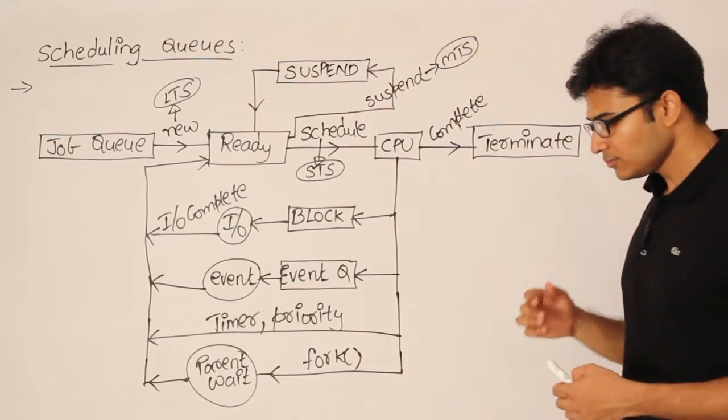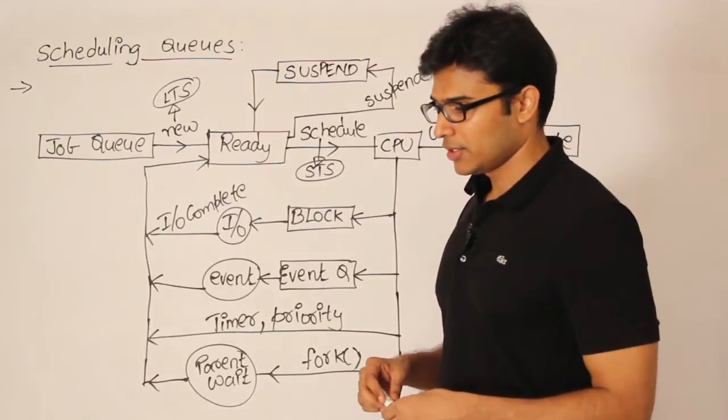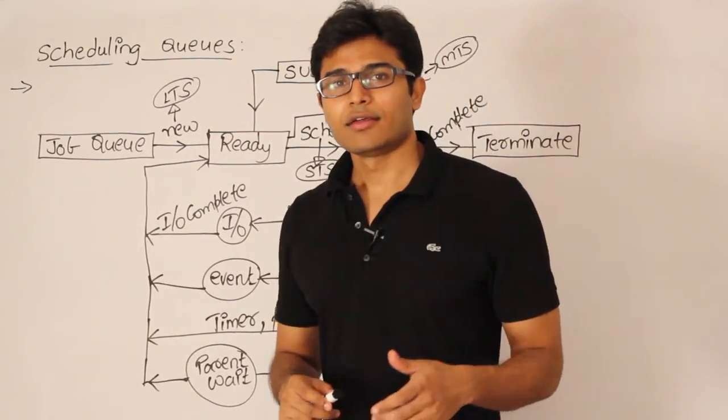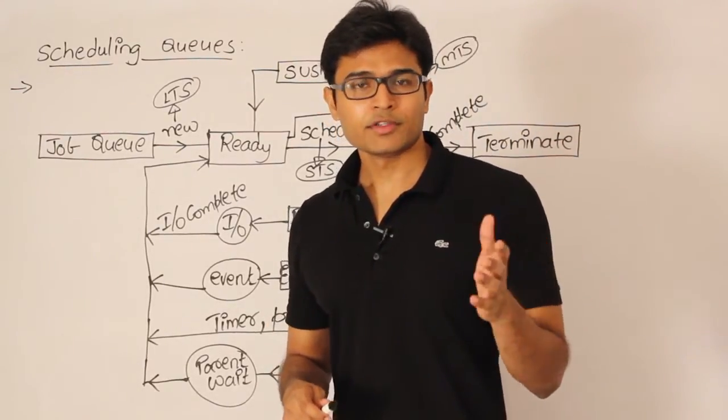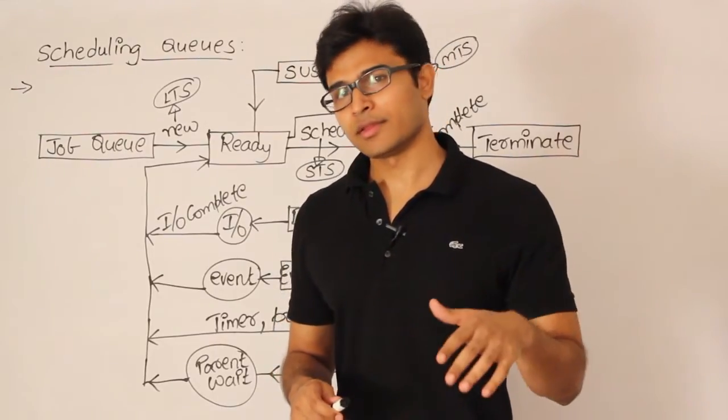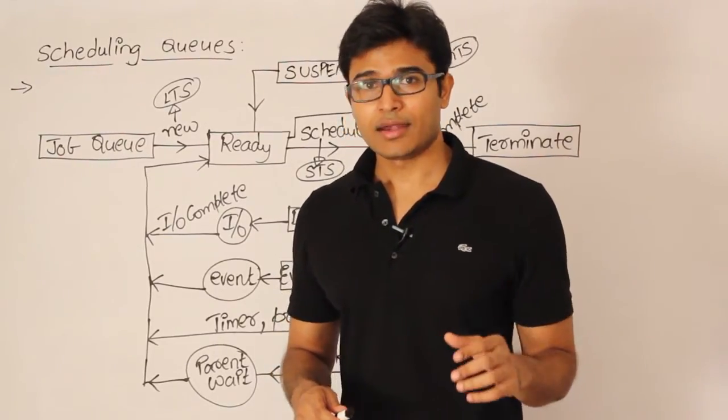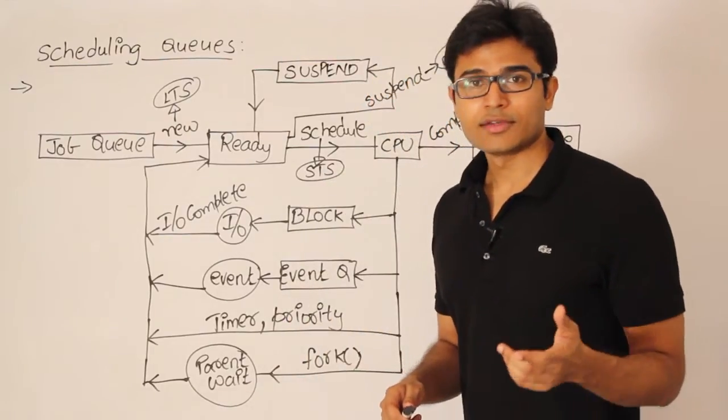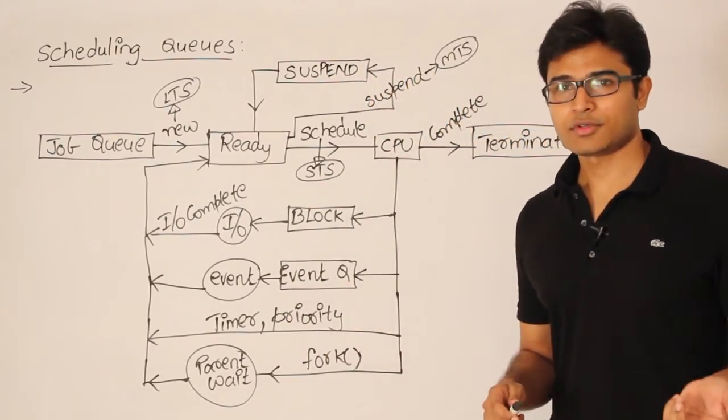And now, one more thing you should see here is, these decisions or the movements from one queue to other queue is nothing but a movement from one state to the other state. And these are taken by various schedulers. I told you that there are three types of schedulers.